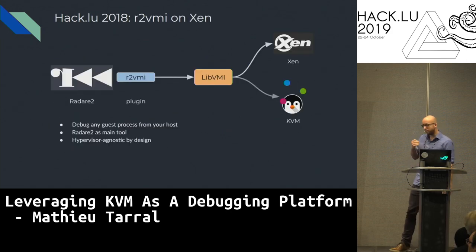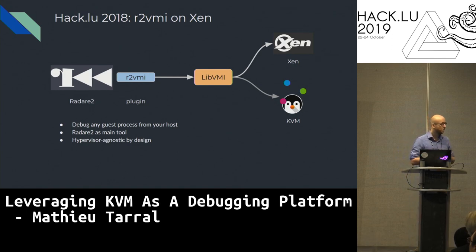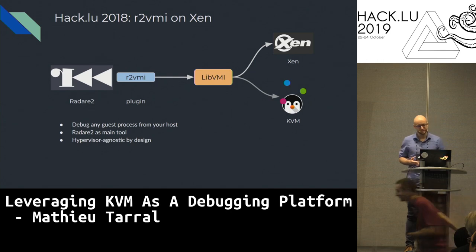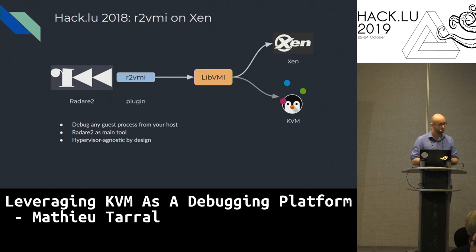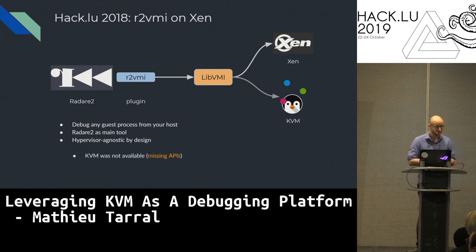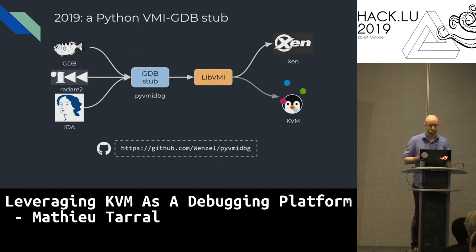If you remember, I was here last year at Hack.lu, and I presented RAD2 VMI. It was running on Xen. It was a RAD2 plugin which aimed to understand the guest context and debug a guest process from the host. It was hypervisor agnostic by design, but you couldn't debug on KVM because there was no API at the time to listen on hardware events. It was feasible, but you didn't have the right API.